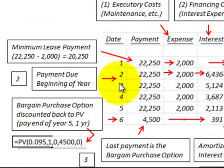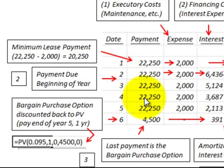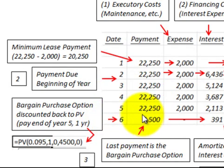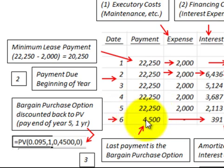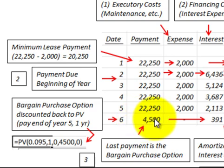We're going to have five payments at the beginning of the year at $22,250 each. Then there's the bargain purchase option at the end of the fifth year for $4,500. The lessee will be able to buy this piece of equipment for $4,500 at the end of the fifth year.